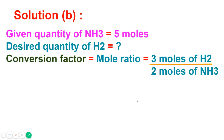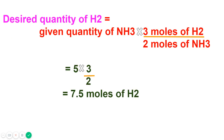For part (b), the given quantity is again 5 moles of ammonia and we need to find the desired quantity of hydrogen. The conversion factor is 3 moles of H₂ over 2 moles of ammonia — the amount to be found is written in the numerator. Multiplying 5 × (3/2) gives 7.5 moles of hydrogen.